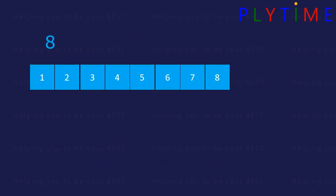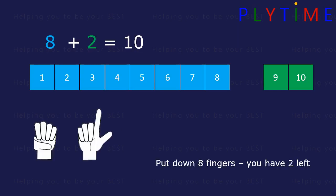8 add 2 is 10. Put down 8 fingers. We still have 2 left up. 8 and 2 is 10.